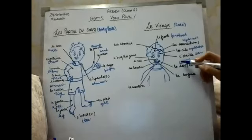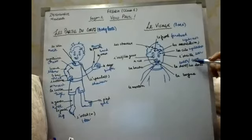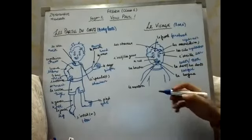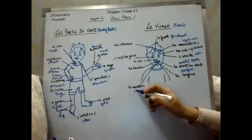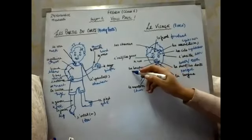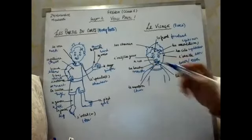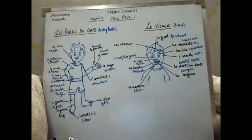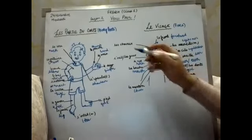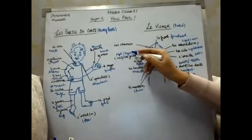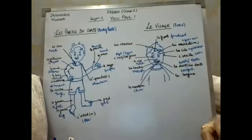La dent means tooth, and les dents means teeth. La langue means tongue. Le menton means chin. La bouche means mouth. La nez means nose. L'œil means eye, and les yeux means eyes — that is the plural. Les cheveux means hair.